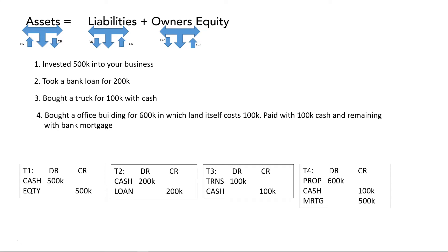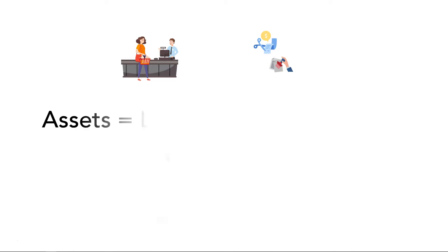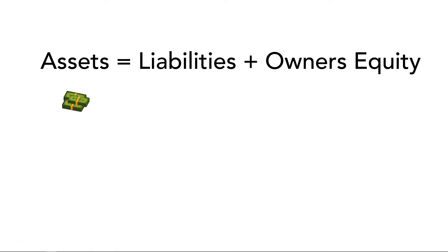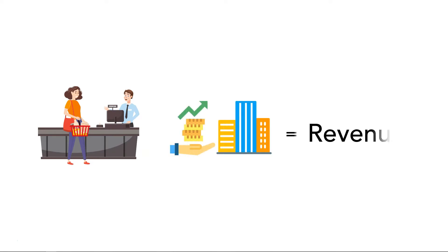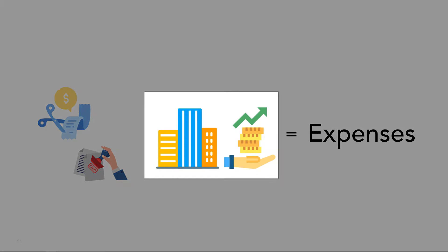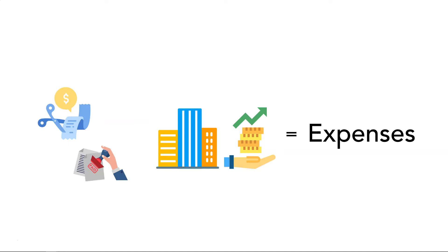Now let's jump into today's topic. Companies exist either to provide a product or service, and they get paid for it. During the process, they also incur expenses like salaries. The question is, how do companies track these revenues and expenses with the help of our accounting equation? The specific way of acquiring assets through a sale of goods or services is called revenue — revenues are resource inflows to the company. On the other hand, companies consume assets like cash for their day-to-day business operations; we call them expenses, which are resource outflows.